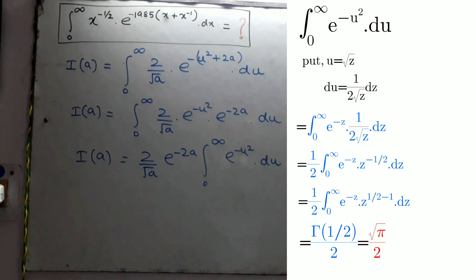If you want to know how gamma 1 upon 2 is nothing but square root of pi, you can check out the videos on YouTube. Now come back to the question.